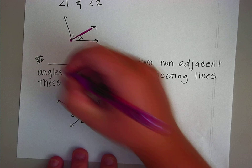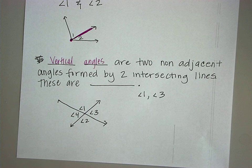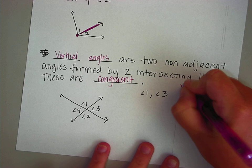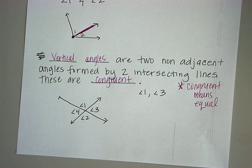The next one is considered a vertical angle. They are two non-adjacent angles formed by two intersecting lines. These are congruent. Let's review — what does congruent mean? Congruent means equal.